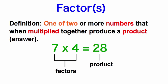If you remember, a product is the same thing as an answer. So in this problem, 7 times 4 equals 28. 7 and 4 are factors because when multiplied together, they produce a product, which is 28.